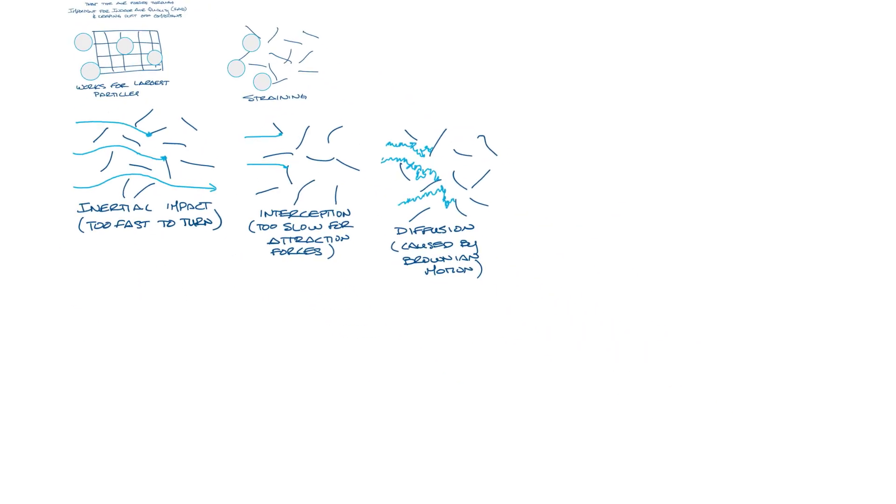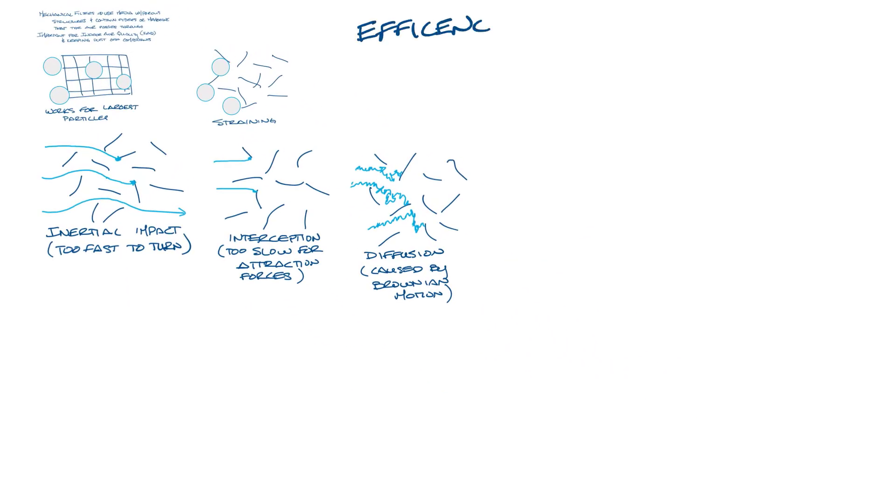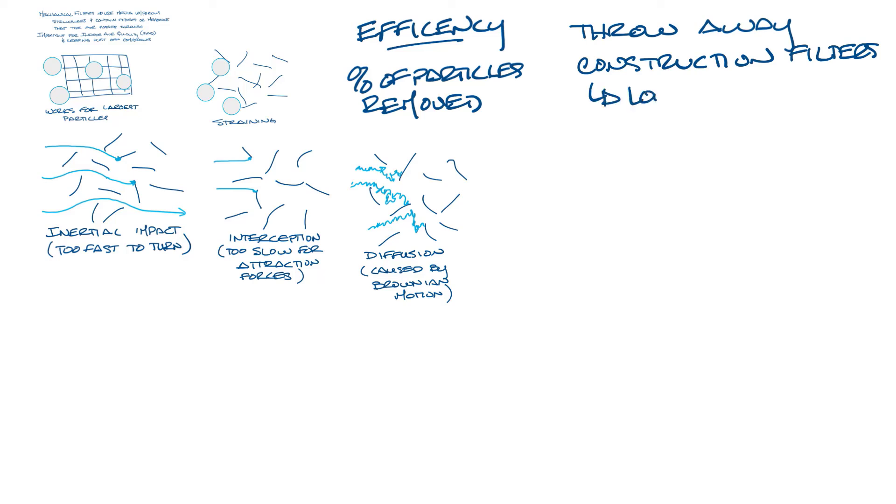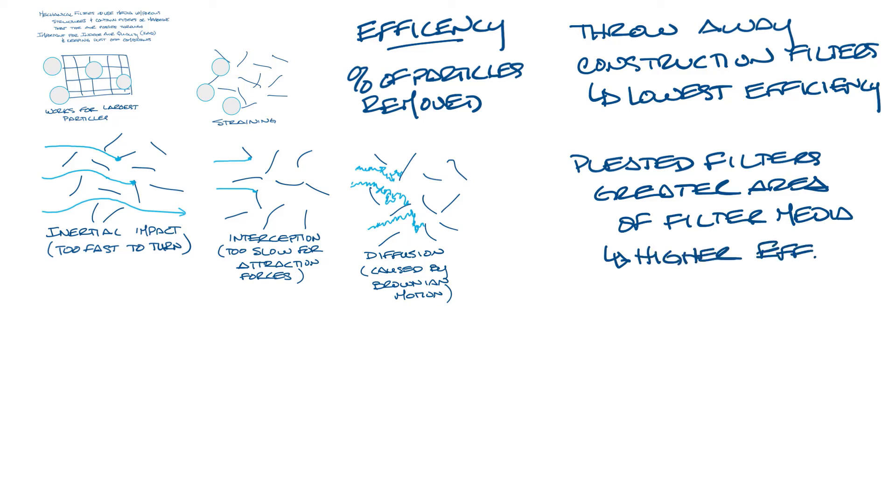The efficiency of a filter is basically the percent of particles removed from the airstream. Lower efficiency filters are usually throwaway filters. These are like the cheap fiberglass filters that are used during construction to keep construction dust out of the equipment. Pleated filters would be the next step up in media. This gives a larger area of filter media than the fiberglass filters so they have higher efficiency. From here you get into deeper filters like bag pocket or V-bank filters which are usually about 12 inches deep and they have higher filter media area and a higher efficiency.